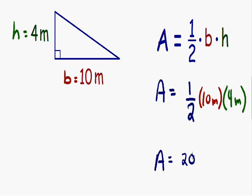We can't forget about our units. Area is always expressed in square units, such as feet squared or yards squared. Since we were given meters in this problem, our units are going to be meters squared. So the area of this triangle is equal to 20 square meters.